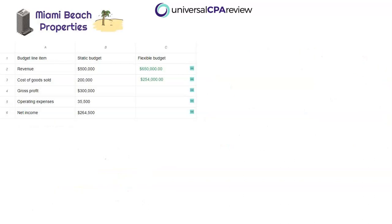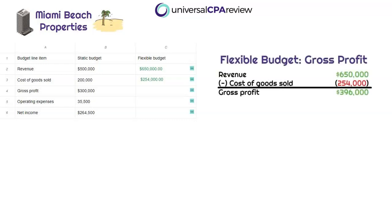We've navigated through revenue and cost of goods sold, and the next line is gross profit. This is straightforward — we simply take revenue and subtract cost of goods sold. Using the flexible budget figures: $650,000 revenue minus $254,000 cost of goods sold gives us gross profit of $396,000. Plug that in as the correct answer for gross profit.